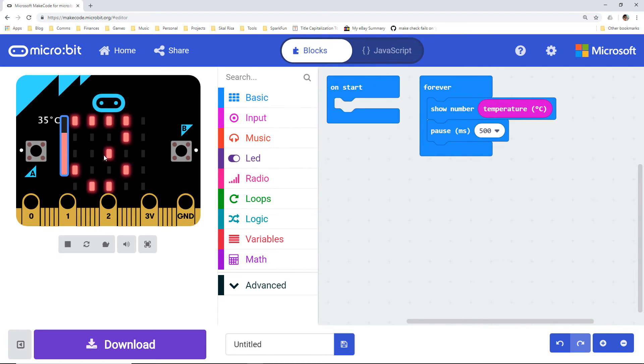In the simulator, try dragging the temperature slider up and down. You should see the scrolling numbers change to give you the temperature around the processor in degrees Celsius.